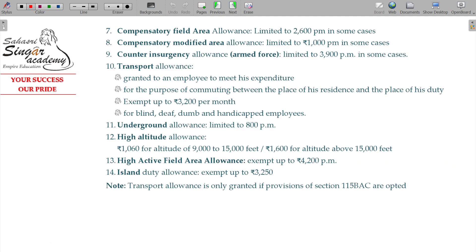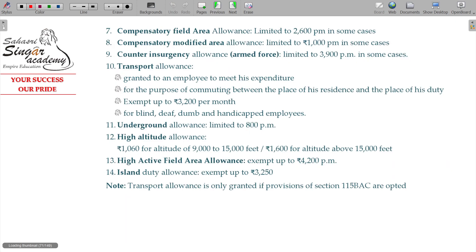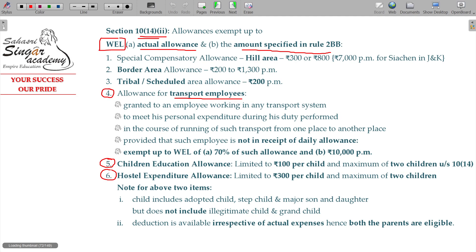We have almost 14 allowances listed, and not only 14 — we have n number of other allowances also. From an exam point of view, the four most important allowances are: allowances for transport employees, children allowances, educational allowances, hostel expenditure allowances, and transport elements. These four allowances are the most important allowances.